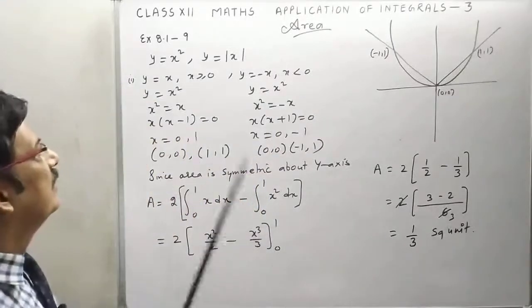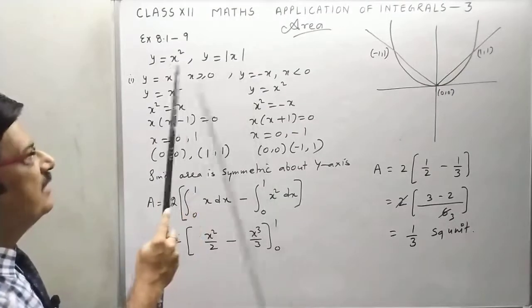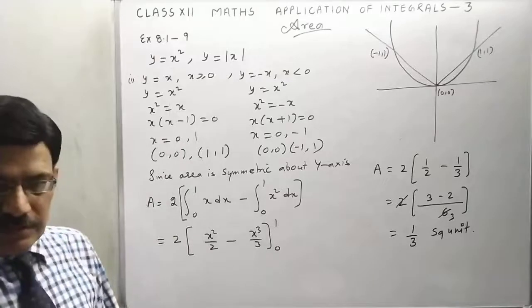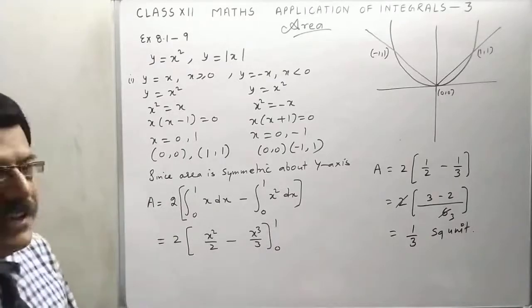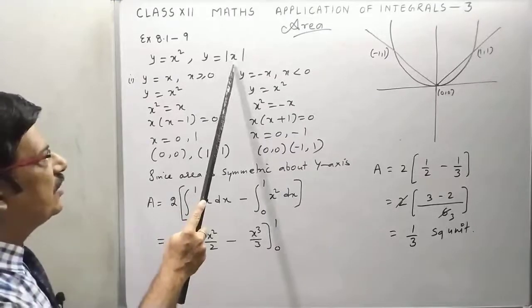Students, today we will take a question of modulus function y is equal to mod x and y is equal to x square. Now we have to find the area between these two. So first of all, break modulus function into two parts.